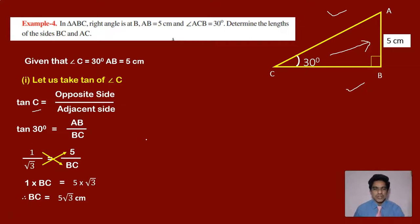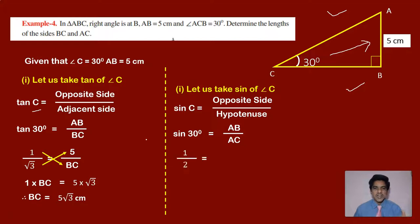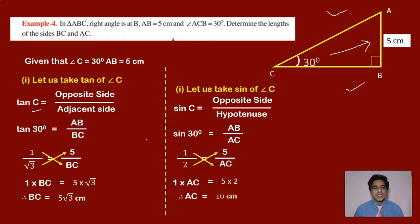Now for the hypotenuse, let us write sin of angle C. Sin C equals opposite side by hypotenuse. C is 30 degrees, so sin 30 degrees equals AB by AC. From the table, sin 30 degrees equals 1 by 2. So 1 by 2 equals 5 by AC. Doing cross multiplication, 1 into AC equals 5 into 2, which is 10. Therefore AC is equal to 10 centimeters.